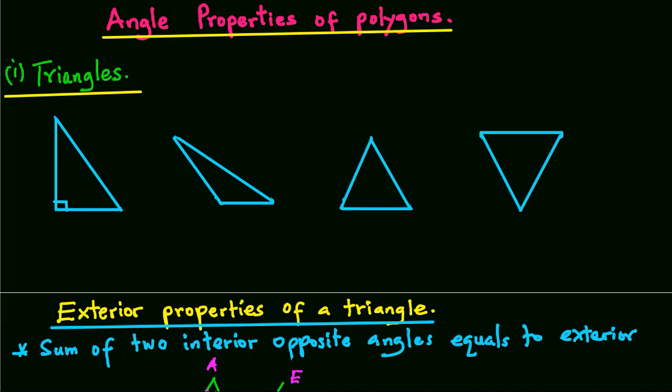Our topic is angle properties of polygons. Our first polygon is a triangle. It is important to note that polygons are plane figures bordered by three or more straight lines. A triangle is a closed plane figure with three straight sides.